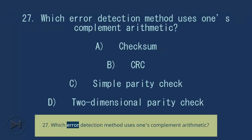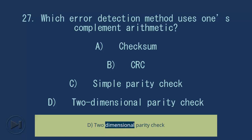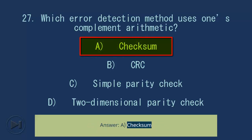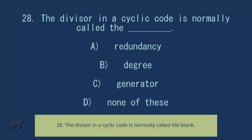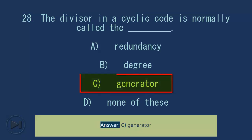Question 27: Which error detection method uses one's complement arithmetic? A) checksum, B) CRC, C) simple parity check, D) two-dimensional parity check. Answer: A, checksum. Question 28: The divisor in a cyclic code is normally called the blank. A) redundancy, B) degree, C) generator, D) none of these. Answer: C, generator.